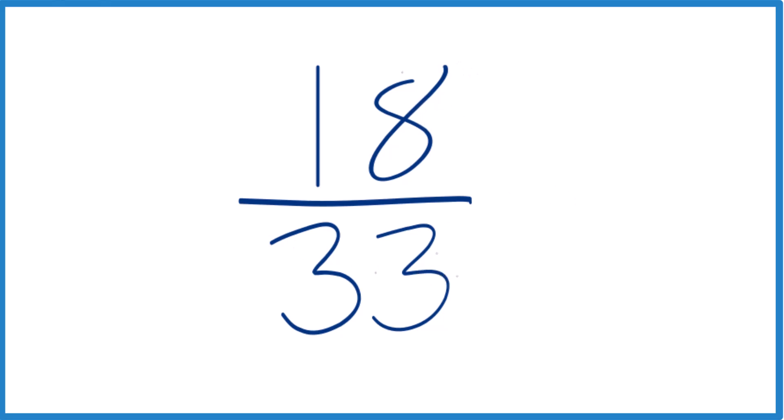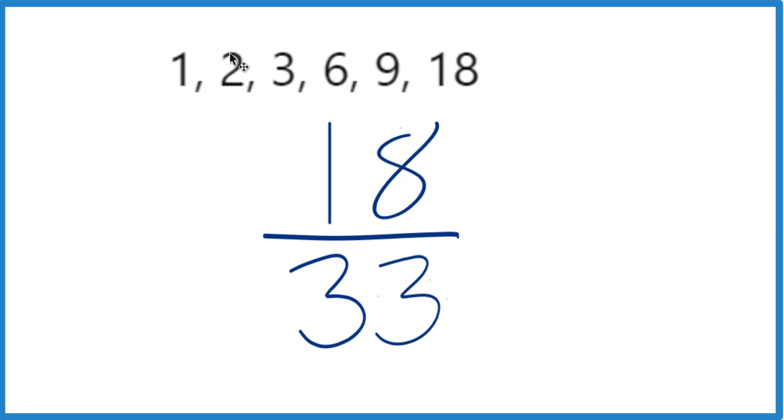So if we look at the factors for 18, we have 1 times 18, 2 times 9, and 3 times 6.